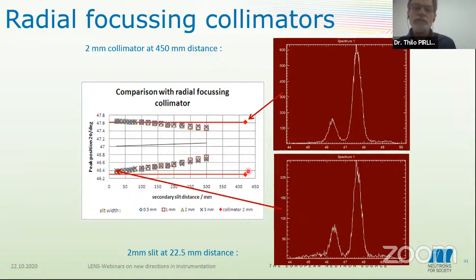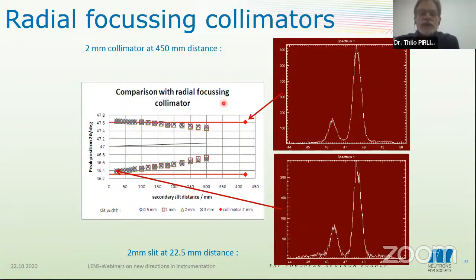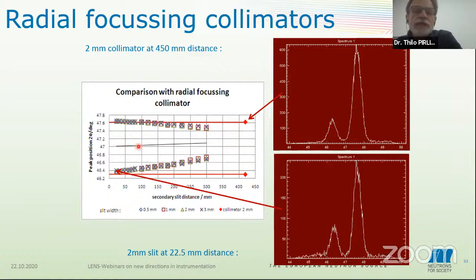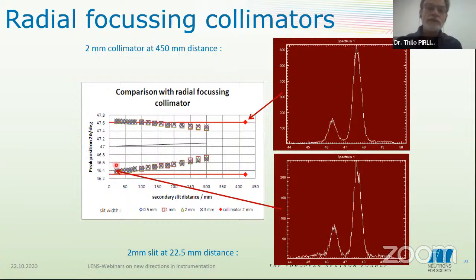In other words, the collimator, although it is at a large distance — which leaves a lot of space for sample movement, important if you want to measure engineering samples, large samples — we need all this space. You can't position the slit closer than 100 millimeters if your sample is already 100 millimeters large. To make it short: with the collimators, you image the strain correctly, and with a slit only if you are very close to the sample — closer than 40 millimeters.